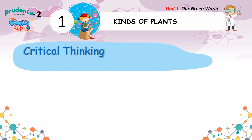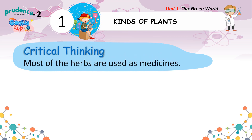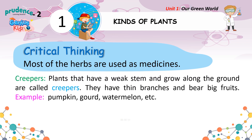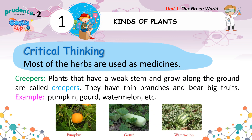Critical Thinking: Most of the herbs are used as medicines. Creepers: Plants that have a weak stem and grow along the ground are called creepers. They have thin branches and bear big fruits. Examples: Pumpkin, Gourd, Watermelon, etc.